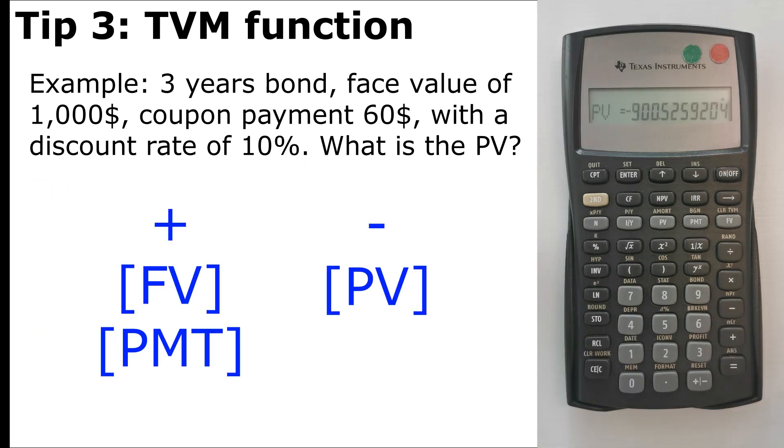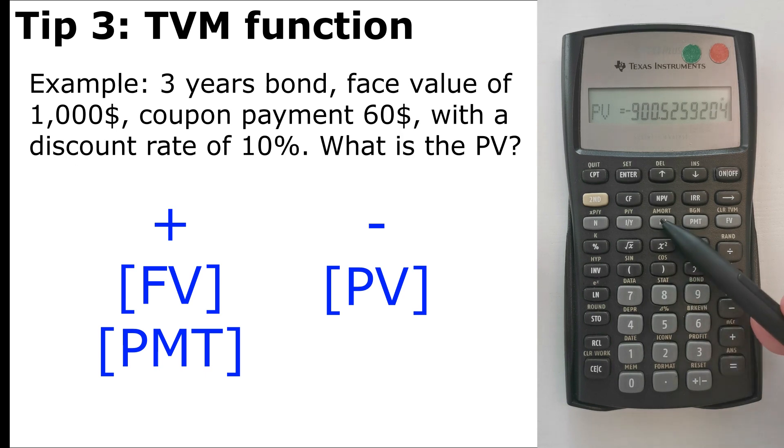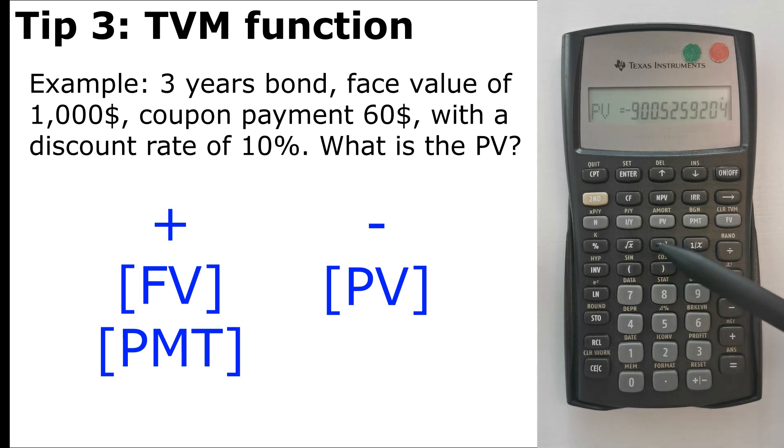So for a quick note, and maybe a reflex to develop, is that future value and payment usually have the same sign, whereas present value has the opposite sign. For example, in the question we just saw, future value and payment were positive, whereas present value was negative. So think of it as credit or debit, or maybe inflows and outflows. The PV has an opposite sign of the FV.